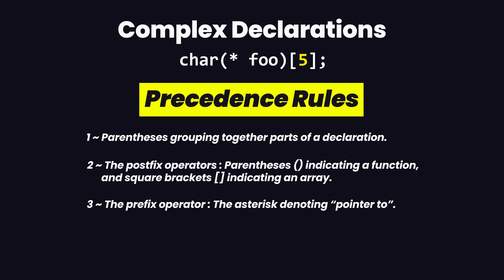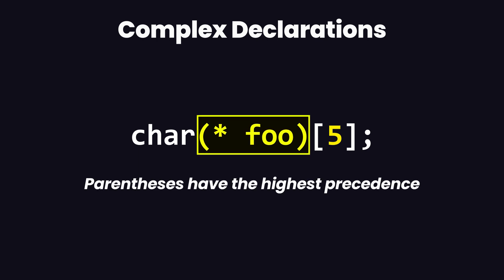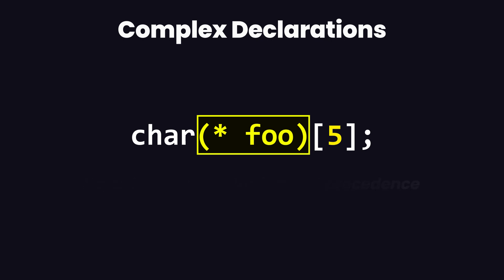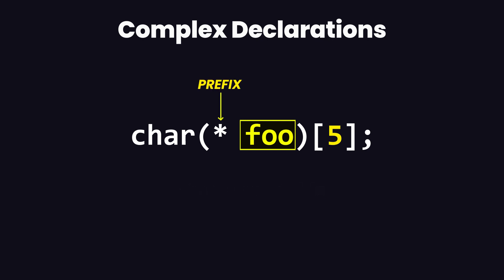Lastly, we have the precedence of the prefix operator — for example, the asterisk symbol denoting a pointer. So let's try to untangle this declaration. We have some parentheses, and we know that parentheses have the highest precedence. So the first thing we are going to do is solve this parenthesis. There is a declaration inside here which is the variable 'foo', and there is no postfix after this variable, only a prefix.